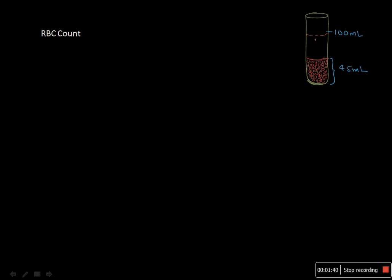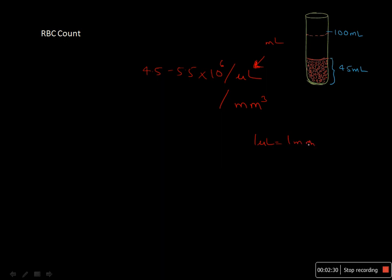Next we discuss RBC count. Out of 100 ml of blood, 45 ml would contain only RBCs after centrifugation, and the number of RBCs inside this packed cell volume is the total RBC count. In males it is around 4.5 to 5.5 million per microlitre, and in females 3.8 to 4.8 million per millimetre cube. Be careful with units — it is per microlitre, not per millilitre, since one microlitre equals one millimetre cube.